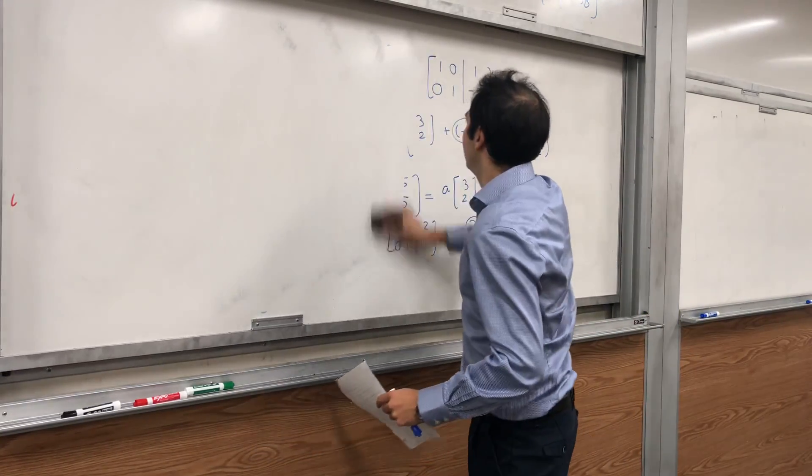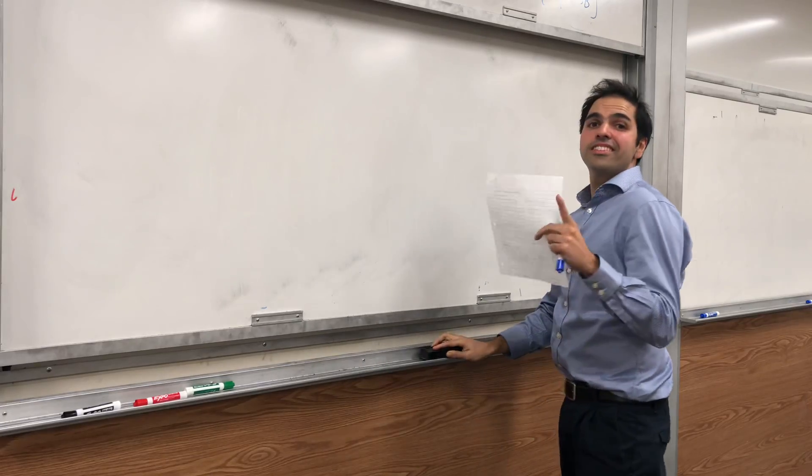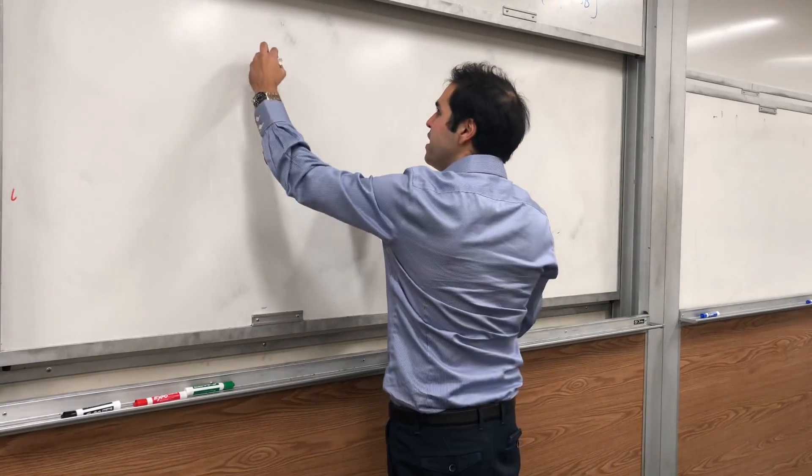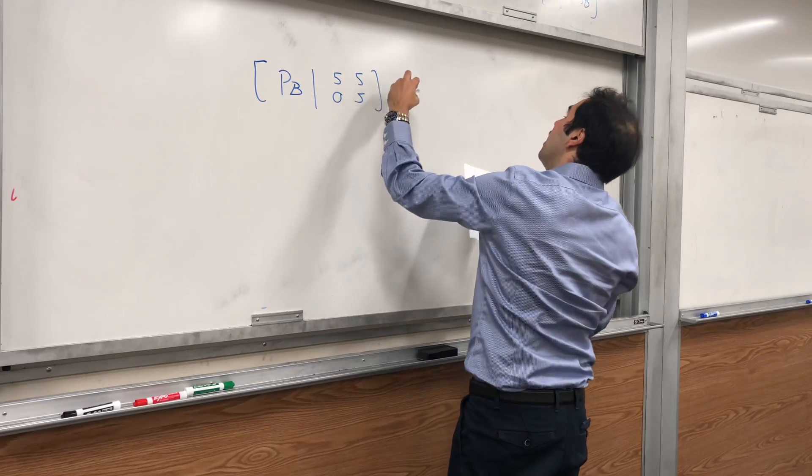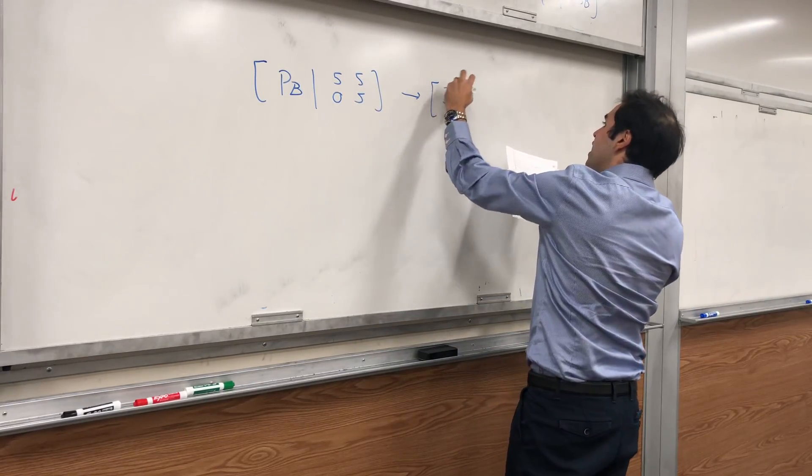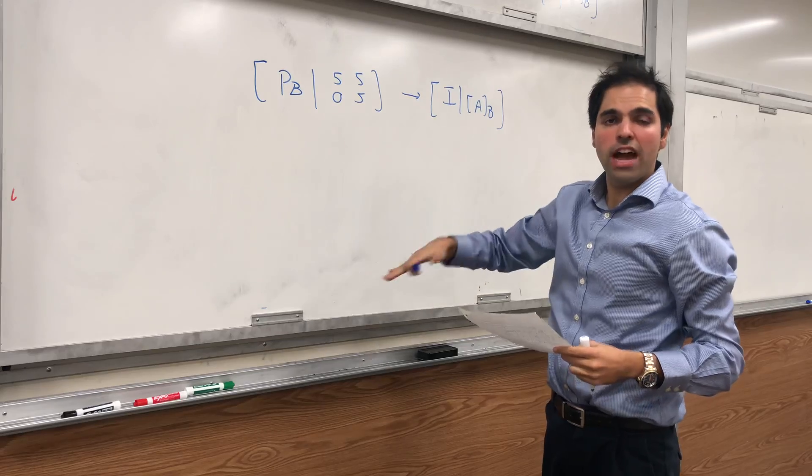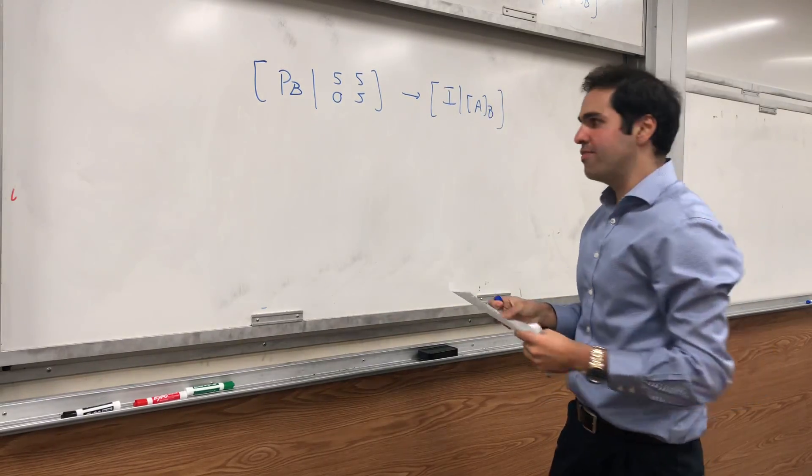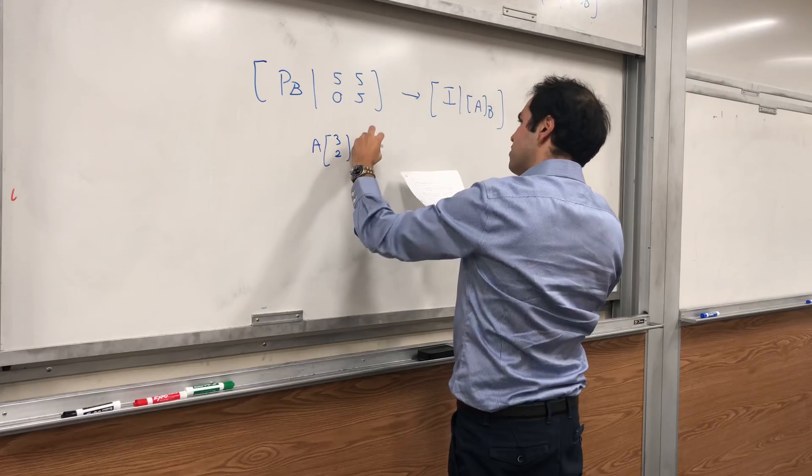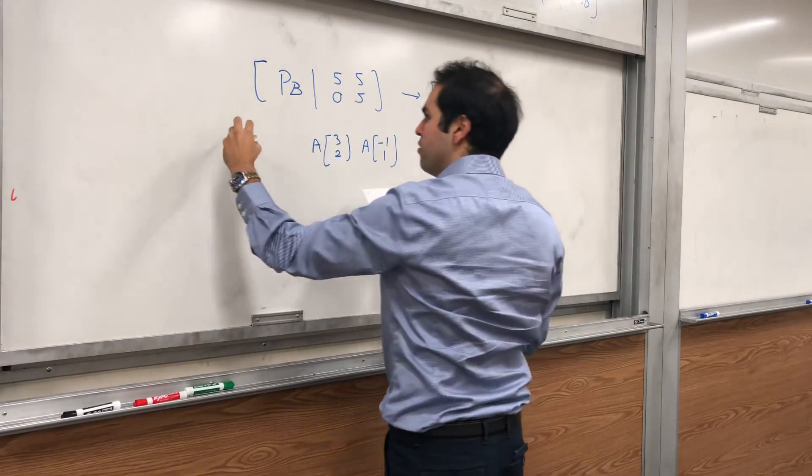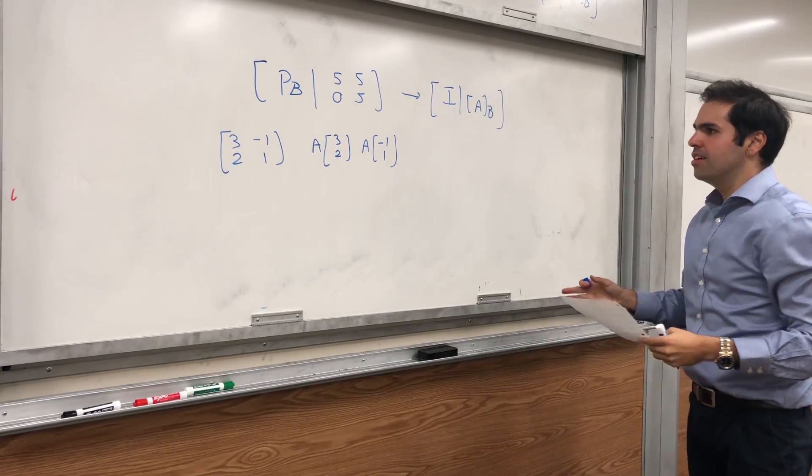And also, I want to emphasize this because I think this is important. So we had [P_B | 5, 0; 5, 5] and it gave us [I_n | A_B]. Now, how did we find this matrix? We applied A to every basis vector. So this was really A(3, 2) and this was A(-1, 1). And remember, P_B was just a matrix by putting all the vectors in B together. So notice, this thing is just the same as A applied to the matrix [3, -1; 2, 1], which is really A·P_B.